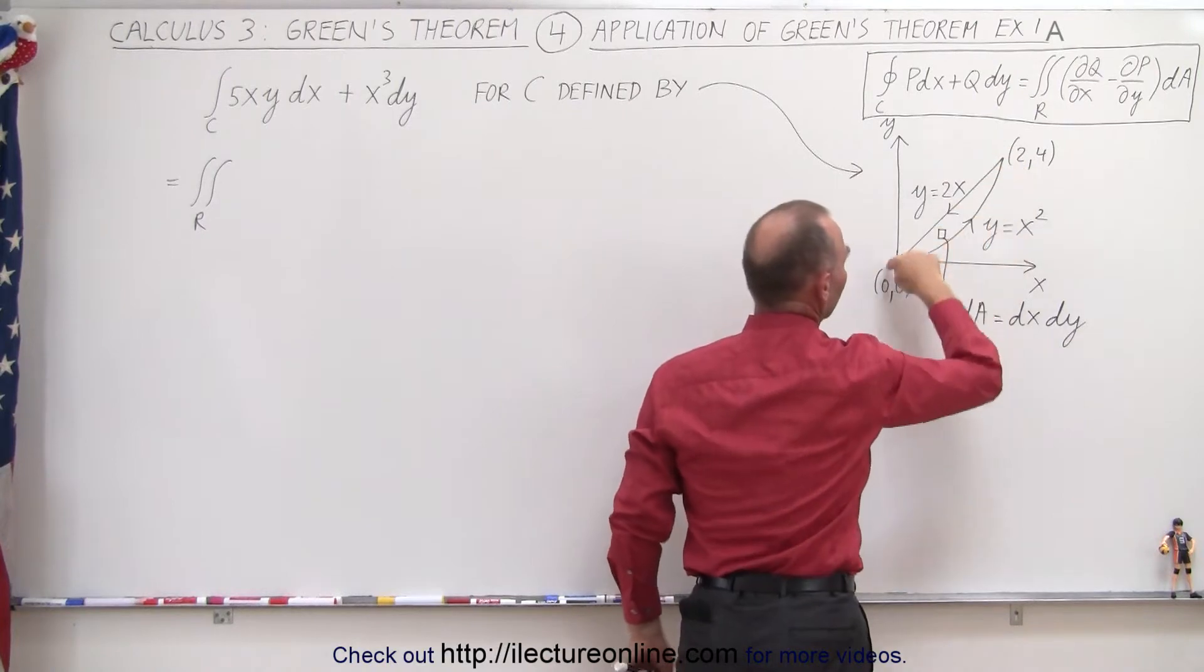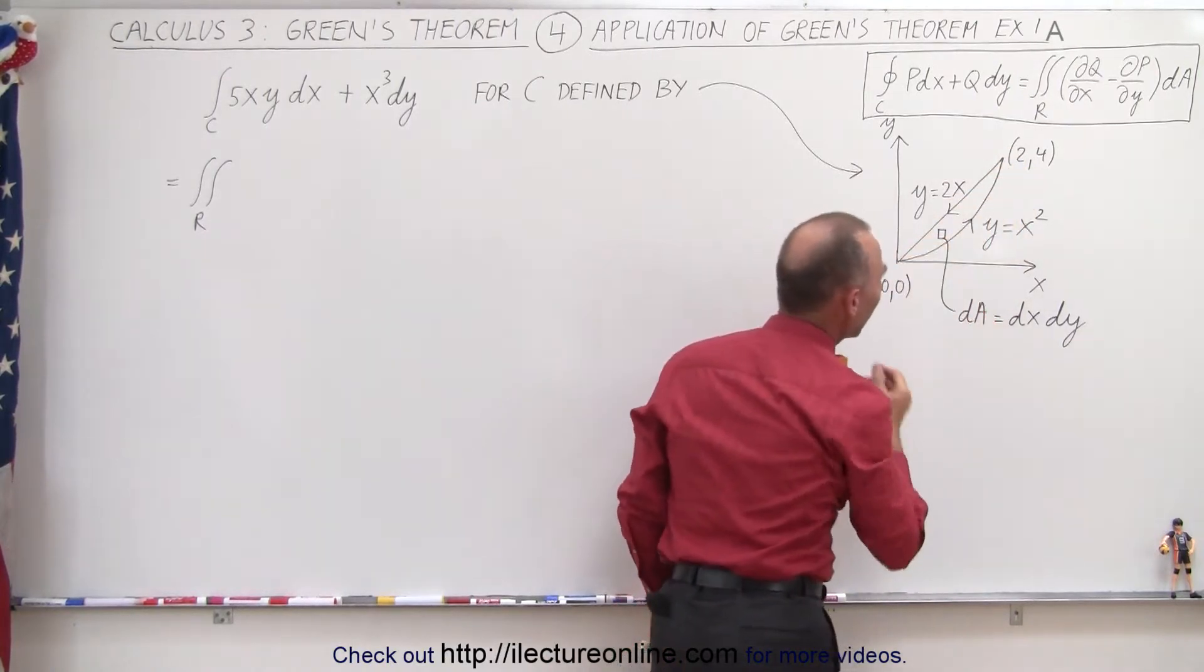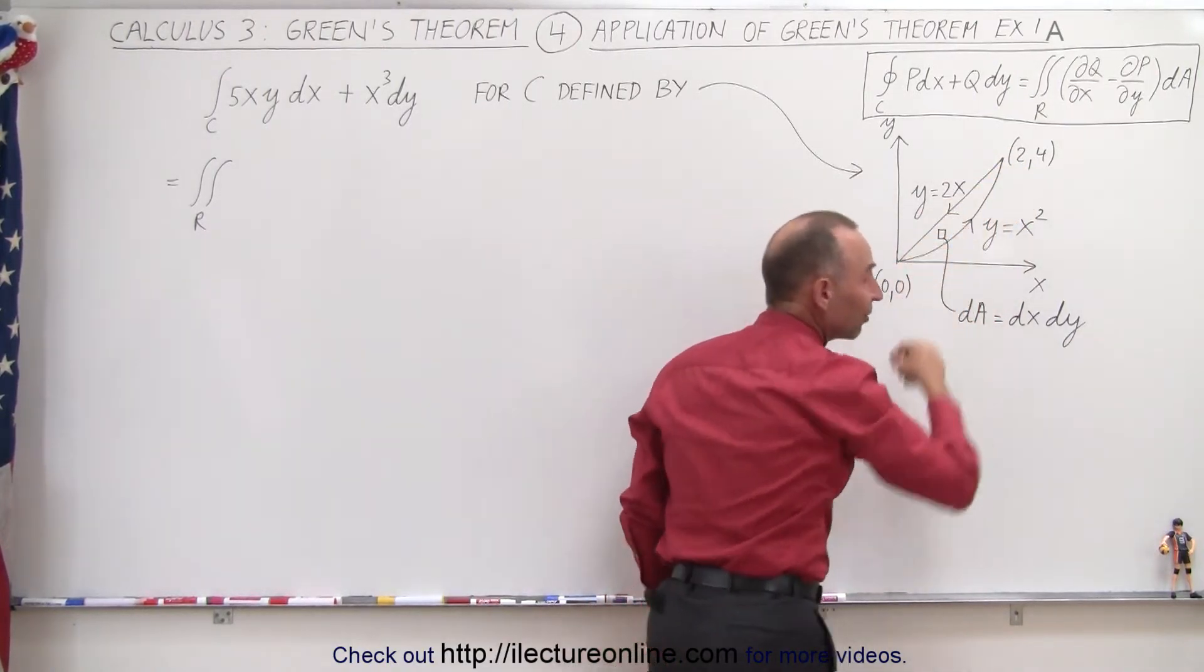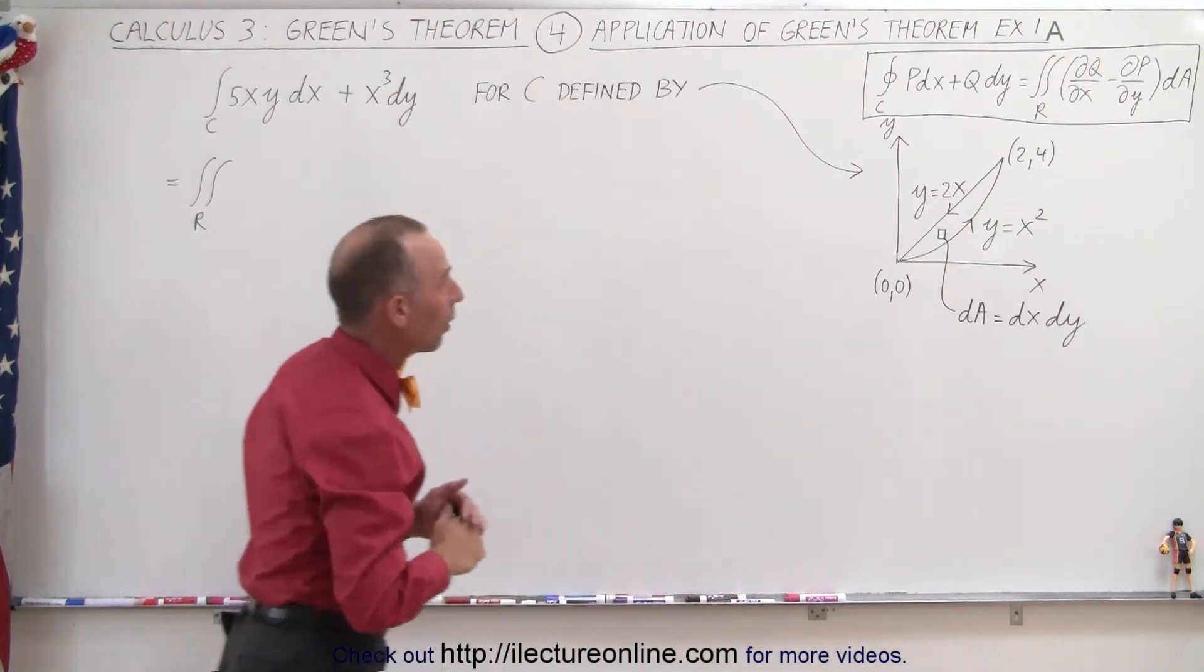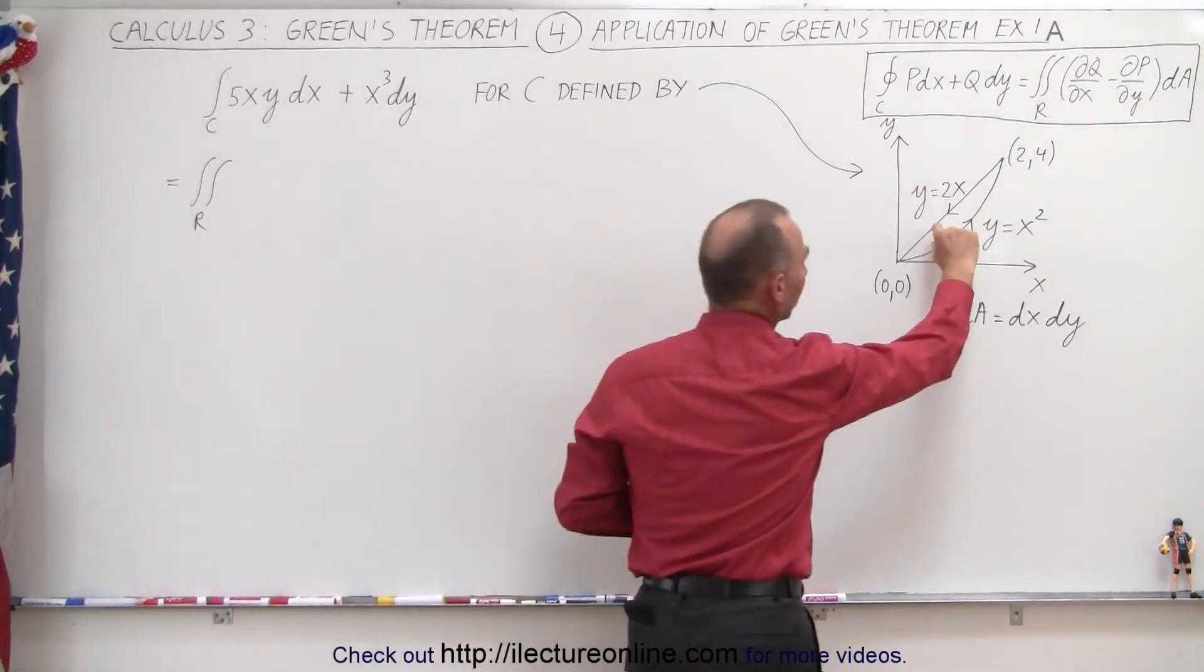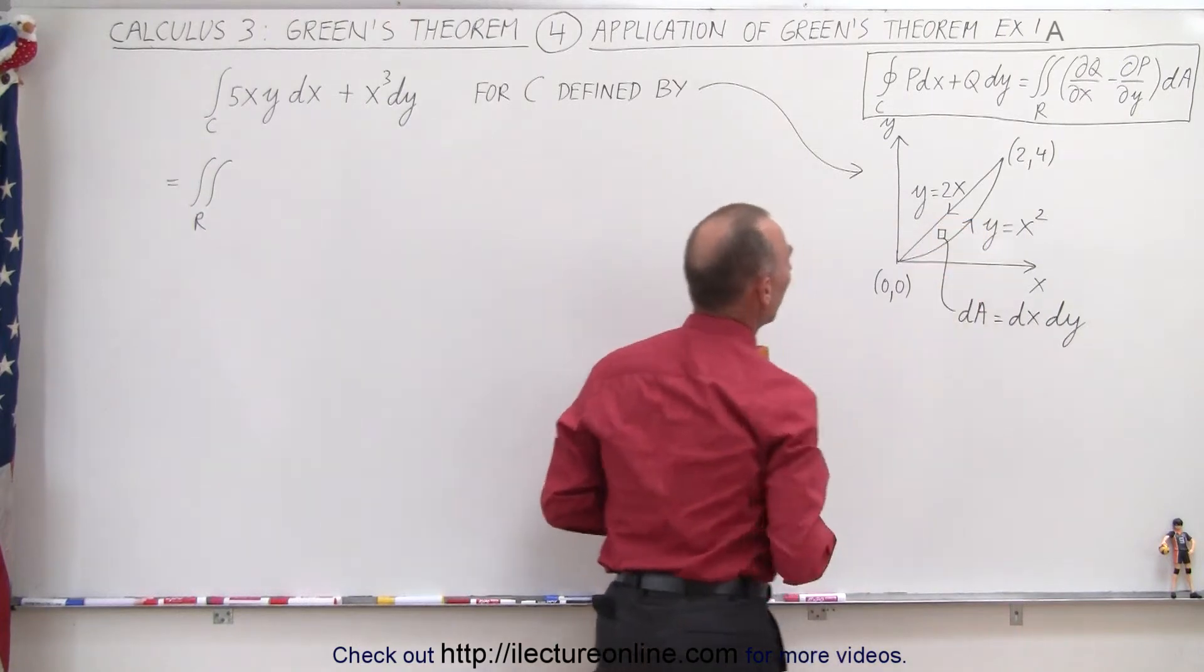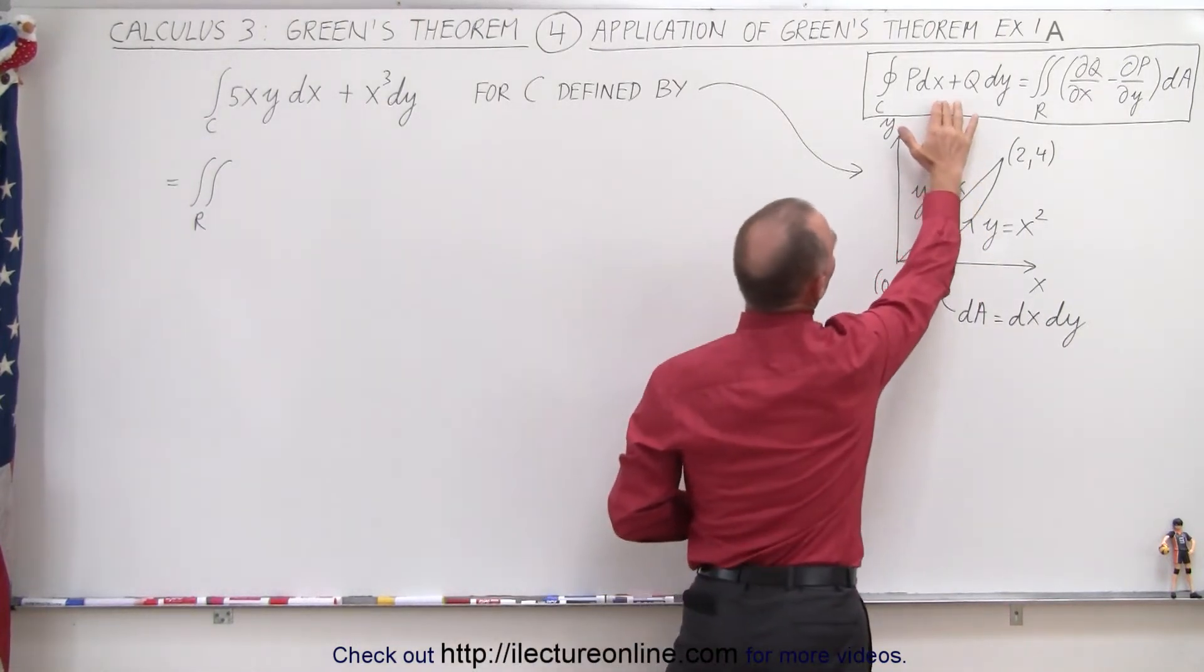Notice that this is a complete curved loop and we're going in a positive sense because we're going counterclockwise. dA is defined as a small little area element, dx by dy.